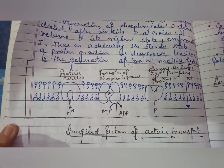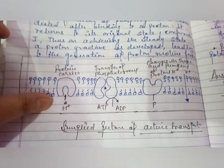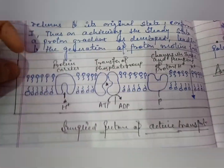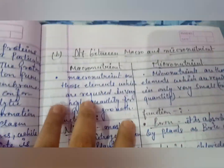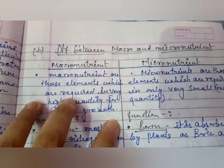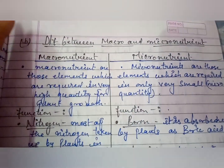Answer seven covers the pattern of active transport and the difference between macronutrients and micronutrients.